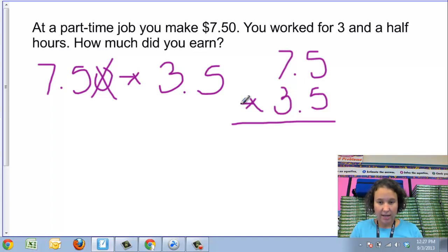I'm going to first take the top number 75 and multiply that by 5. So 5 times 5 gives me 25. I'm going to write the 5 down and carry the 2 up here. Then I'm going to do 7 times 5 diagonally. 7 times 5 is 35, and I'm going to add that 2 that I carried. So 35 plus 2 is 37.